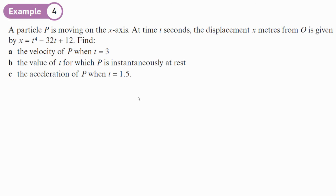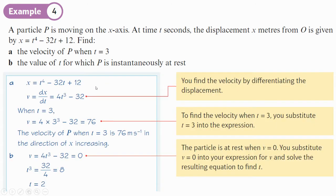So, the first example is you've got a particle moving on the x-axis. At time t, displacement x meters from O is given by x equals t to the power of 4 minus 32t plus 12. So, we're going to find the velocity. We've got the particle moving on the x-axis. The displacement is x meters. So, they've used x instead of s. But we are going to have to differentiate to find out the gradient function.